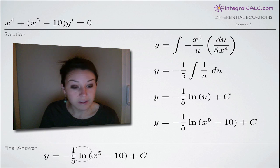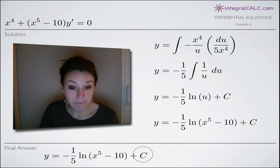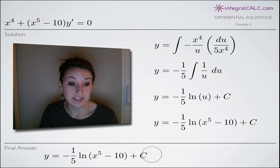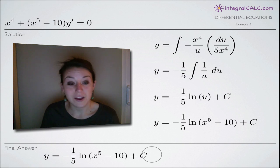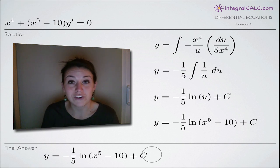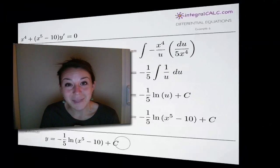Our final answer is negative one-fifth times the natural log of x to the 5th minus 10, plus c. I hope that helped and was a good example of both differential equations and u-substitution. I'll see you guys next time — bye!